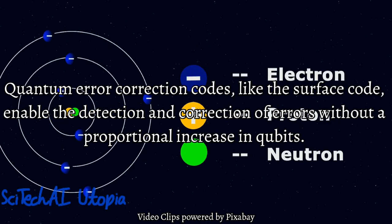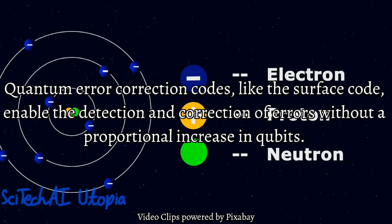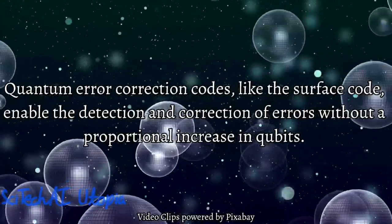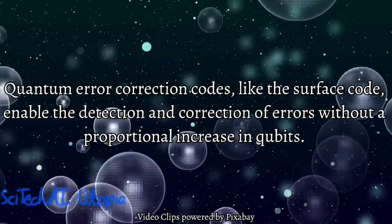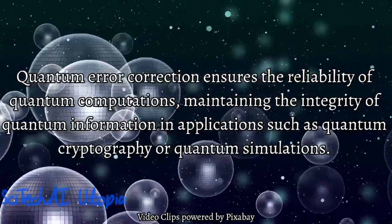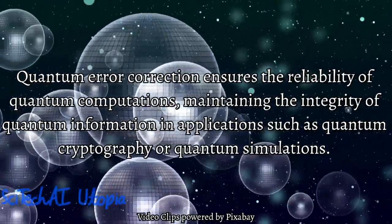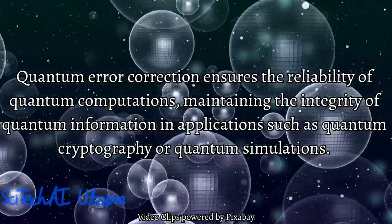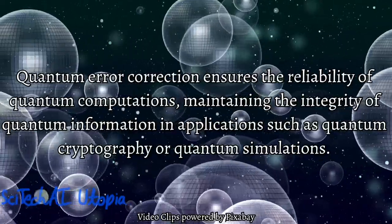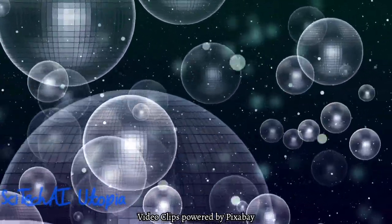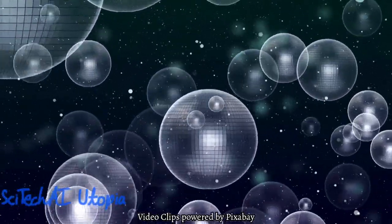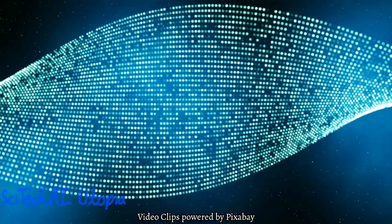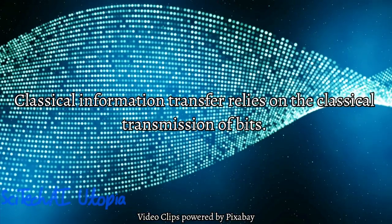Number 12: Quantum Error Correction. Classical computers use error-checking codes to detect and correct errors in data transmission or storage, but these methods often involve redundancy, which can be resource-intensive. Quantum error correction is a crucial aspect of quantum computing, as quantum states are fragile and susceptible to decoherence. Quantum error correction codes, such as the surface code, enable the detection and correction of errors without a proportional increase in qubits, helping maintain the integrity and reliability of quantum computations.